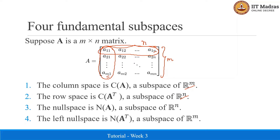The null space N of A is a subspace of R^n and it is the set of all solutions to the linear equation Ax equal to 0. Those vectors which solve this equation belong to the null space. Similarly, the left null space is the null space of A transpose, which is a subspace of R^m and it is the set of all solutions to the system A transpose y equal to 0.